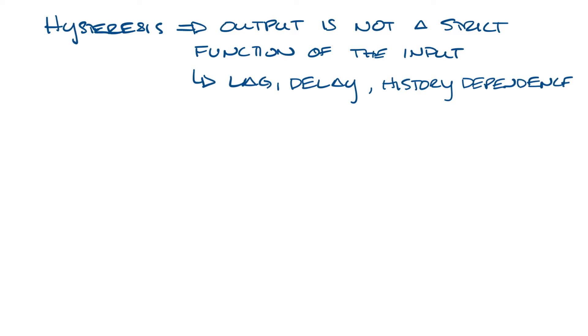So what is hysteresis? It's a property of a system where an output value is not a strict function of the corresponding input, but rather it incorporates some lag, delay, or history dependence. In particular, when the response for a decrease in the input variable is different from the response for the increase in that same variable.